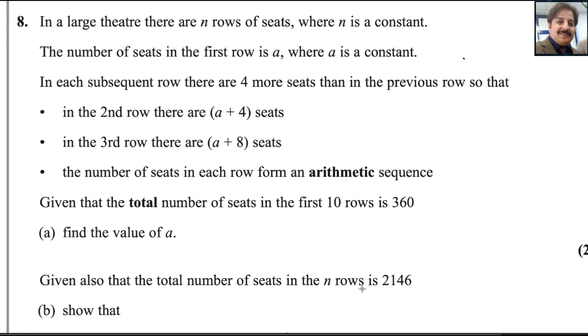In a large theater, there are n rows of seats where n is a constant. The number of seats in the first row is a where a is a constant. In each subsequent row, there are 4 more seats than in the previous row. For example, if in the first row there are 10 seats, then in the next row it will be 14, then 18. So in the second row there are a + 4, in the third row a + 8. It is an arithmetic sequence.